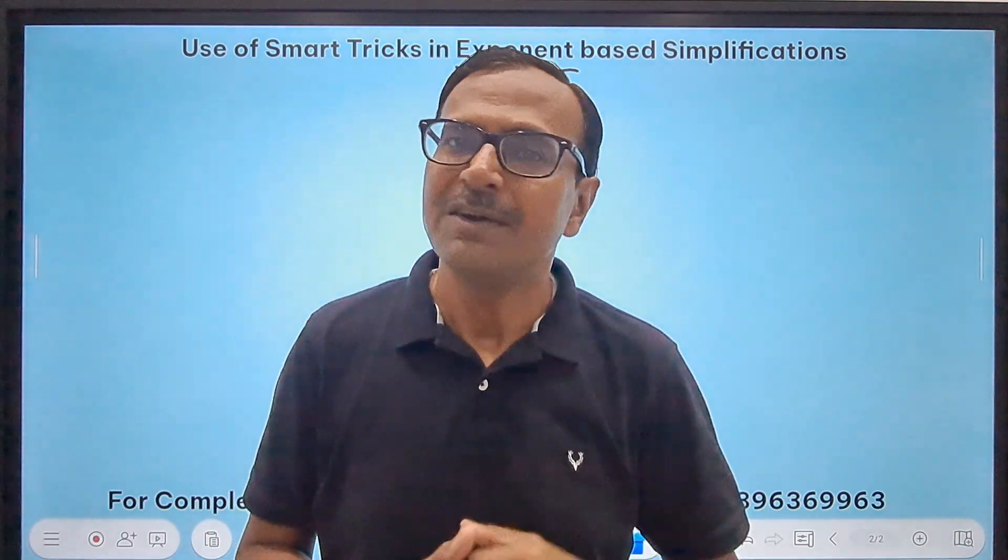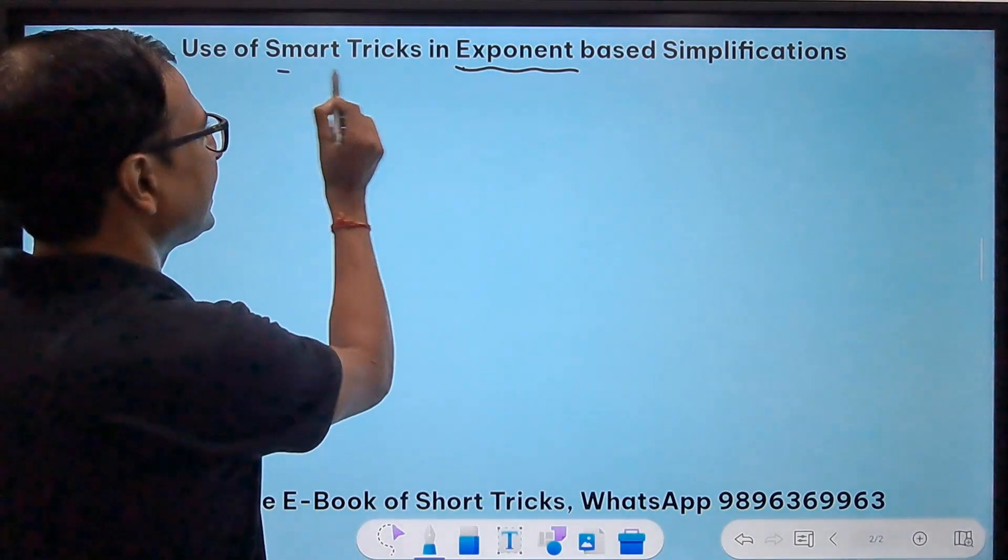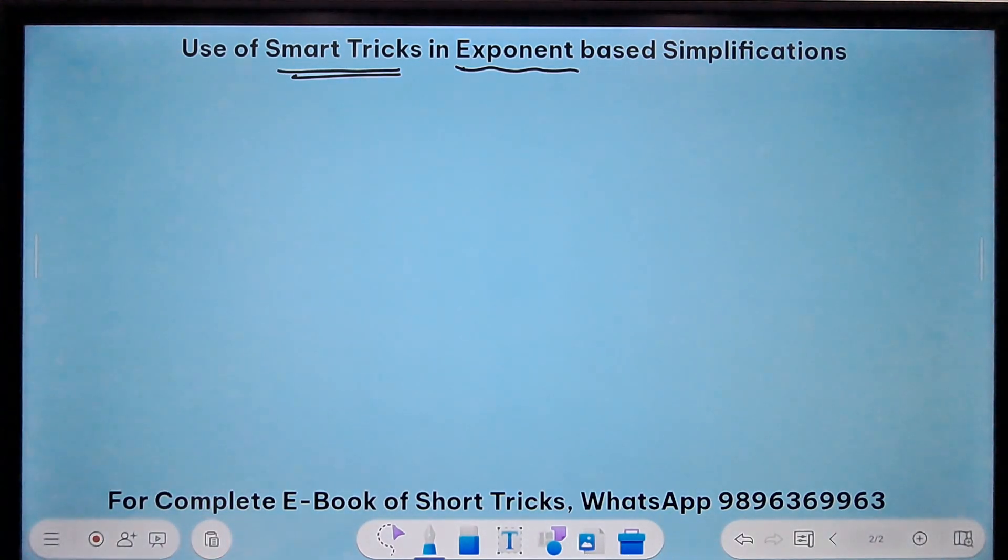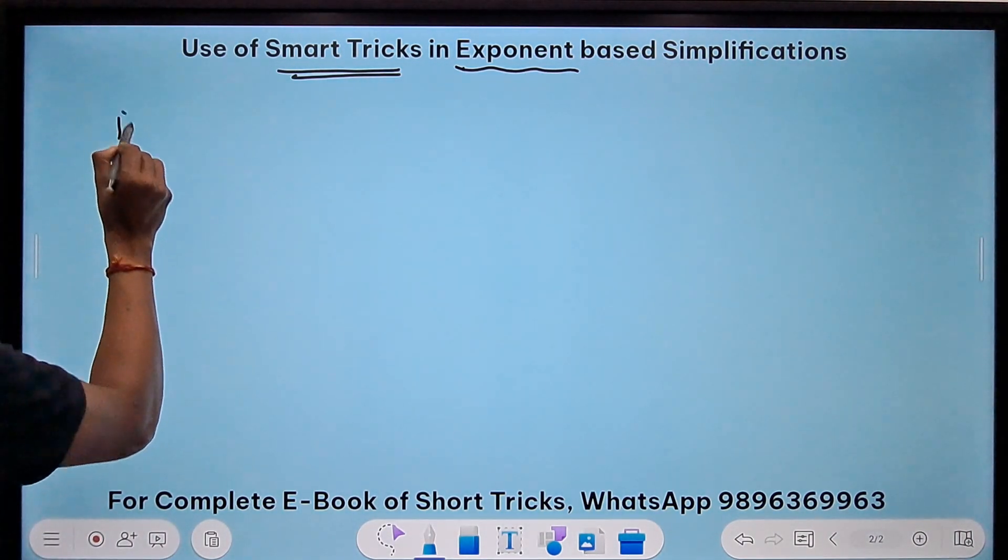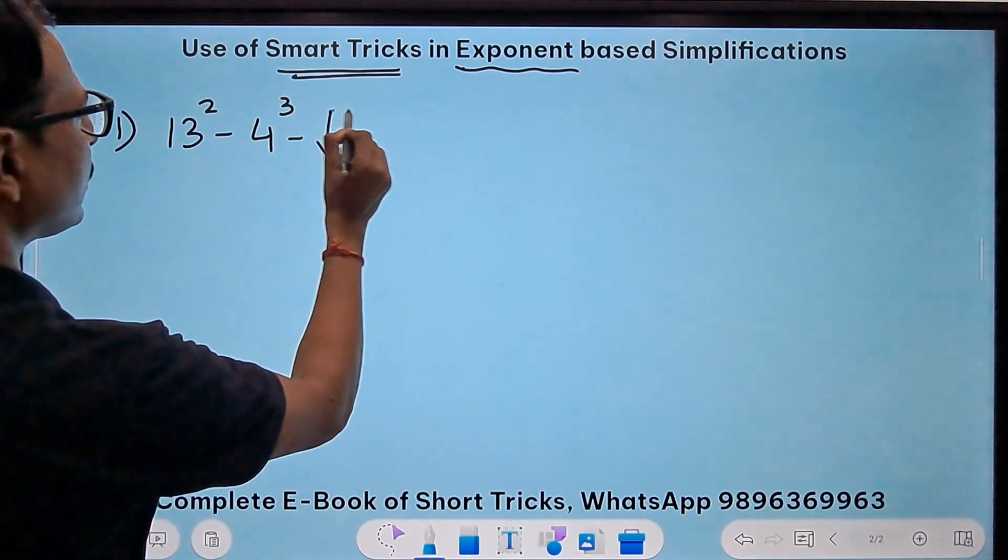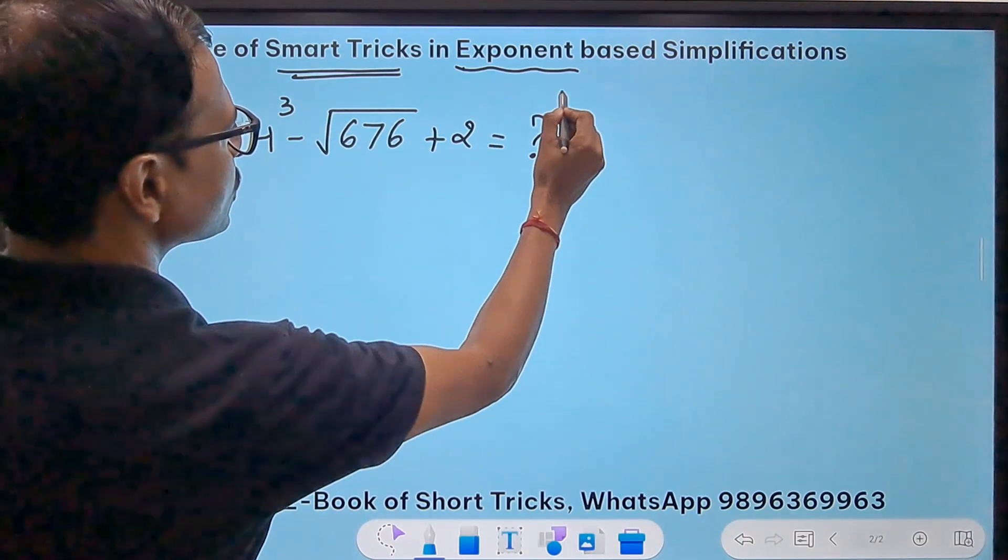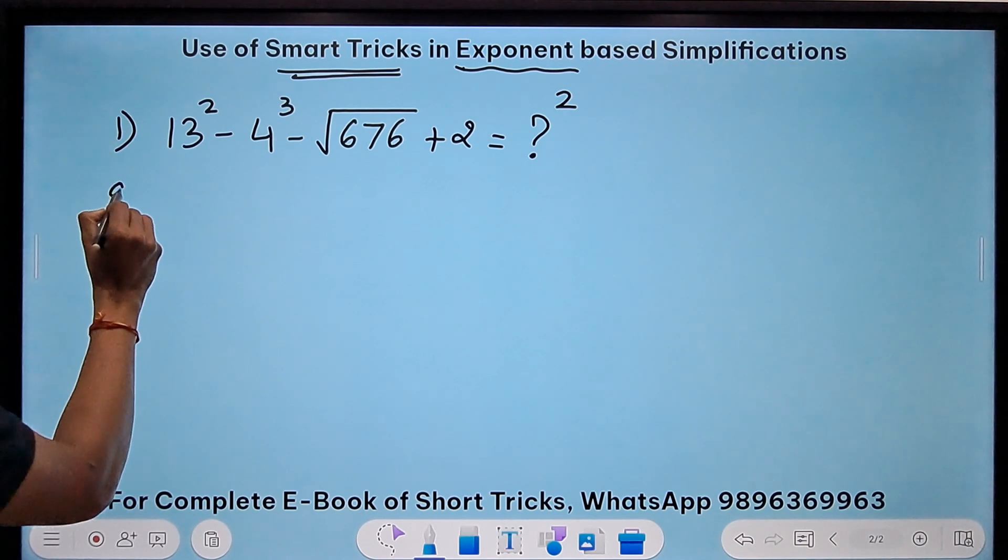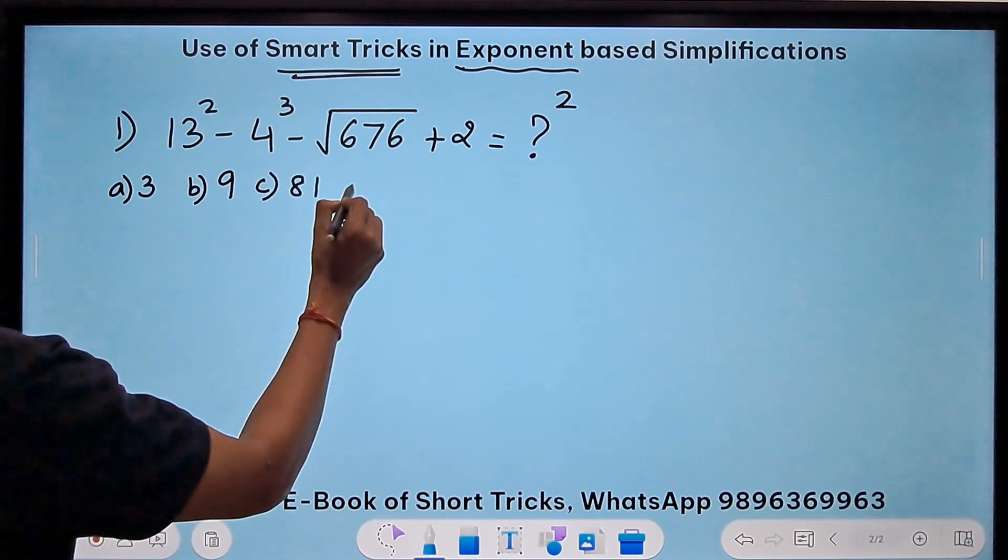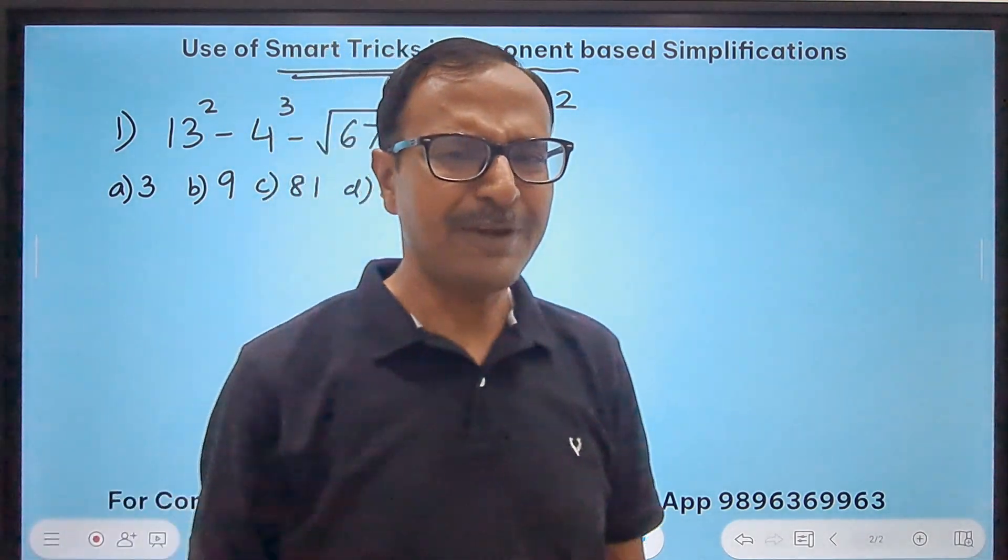So let's see some of the questions which are like previous year questions of prominent quant exams and I'll show you how the smart tricks can help us in these type of simplifications. So let's take up the first question for the video. In this question we have a simple looking question where we have to do 13² - 4³ - √676 + 2 = ?². So we need to find out what is this something. The options given are a) 3, b) 9, c) 81, d) 27, and e) 18.